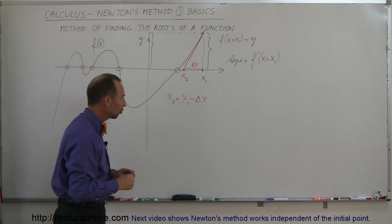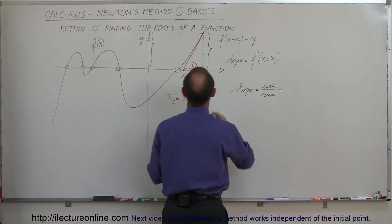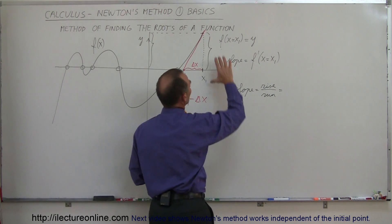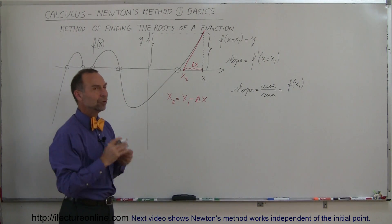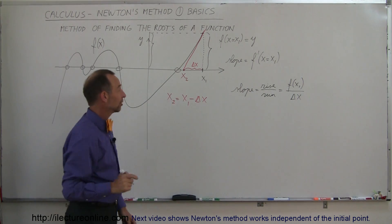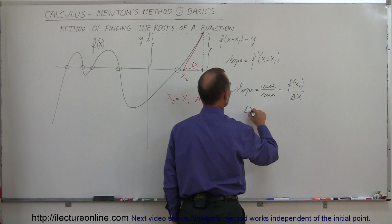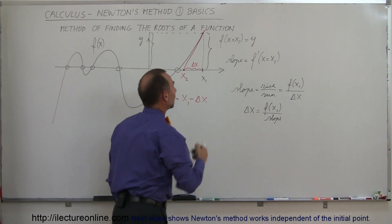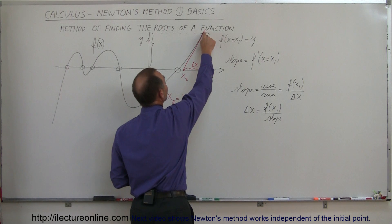Let's go back to the definition of slope — slope equals rise divided by run. The rise in this case, looking at this triangle, is equal to the height of the function evaluated at x₁, which is f(x₁). The run would be delta x. So the slope equals f(x₁) divided by delta x. And the slope of the line is equal to the derivative of the function evaluated at x₁.